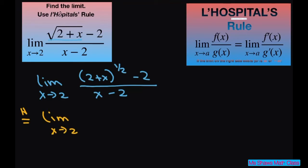When you differentiate the numerator, you get 1/2 times (2 + x) to the negative 1/2 power, and this is times 1, so I don't need to put that. This is going to be 0. The denominator is just going to be 1.